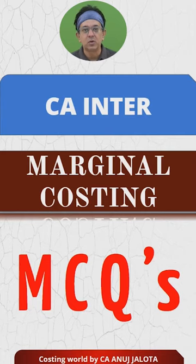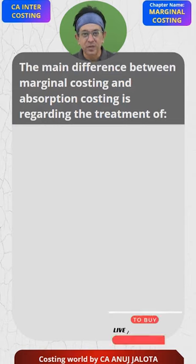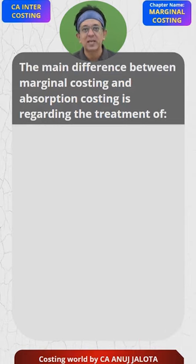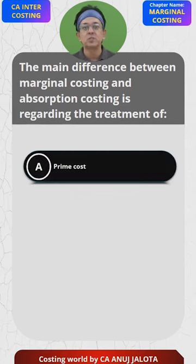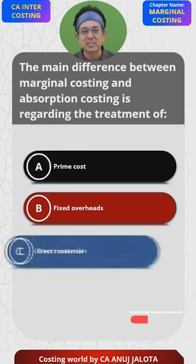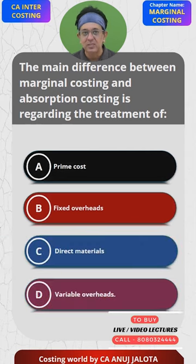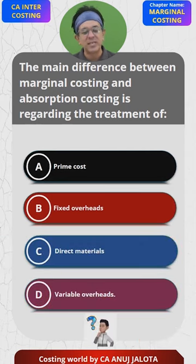CA Inter Marginal Costing MCQs. The main difference between Marginal Costing and Absorption Costing is regarding the treatment of: A) Prime Cost, B) Fixed Overhead, C) Direct Materials, and D) Variable Overheads. Easy question — think of the answer.